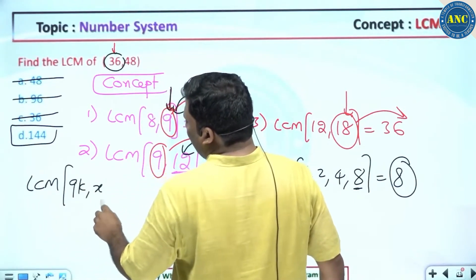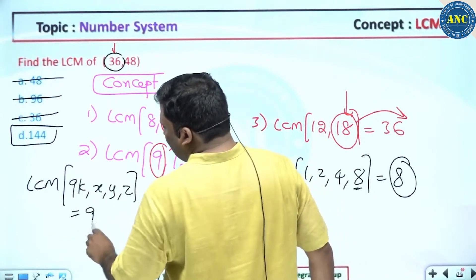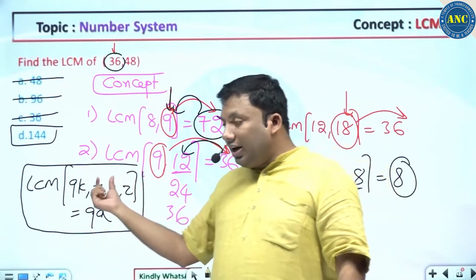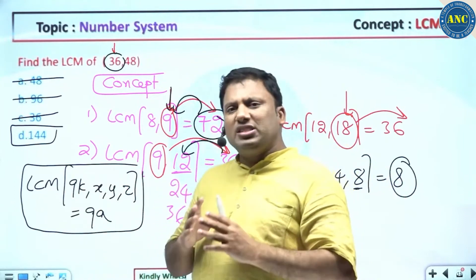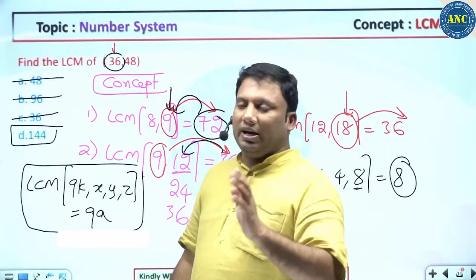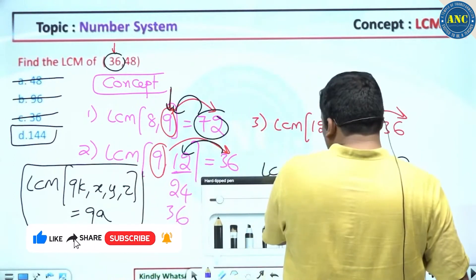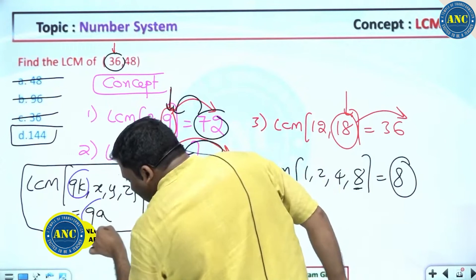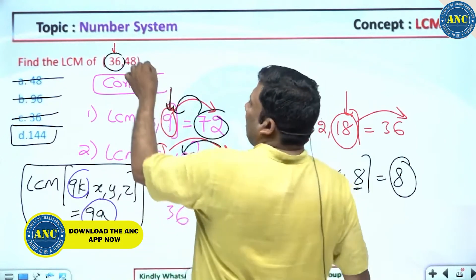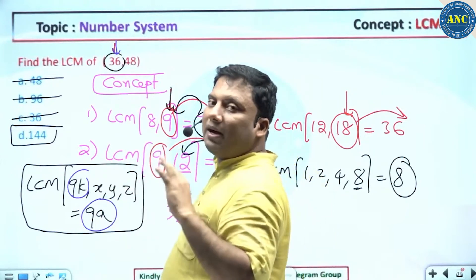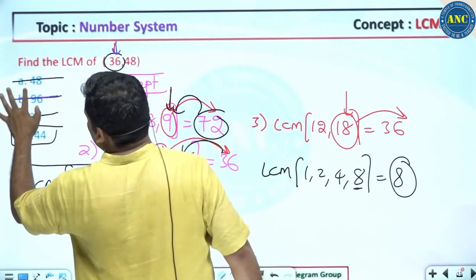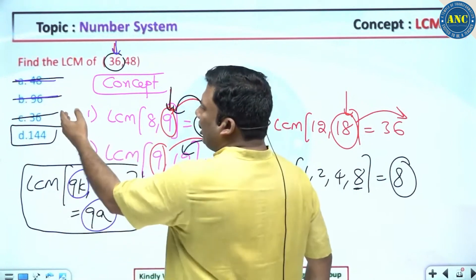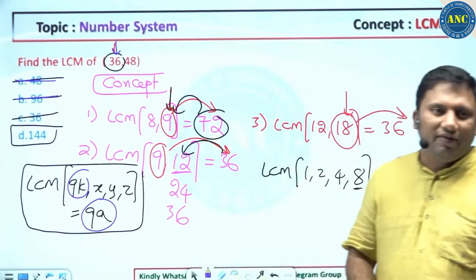Two learnings from this question: First, if one number's digital sum is 9 — written as 9k — the LCM's digital sum will also be 9. Second, LCM is always greater than or equal to the largest number. So for LCM of 36 and 48, the answer 36 is not possible. The answer is 144. Is the idea clear?